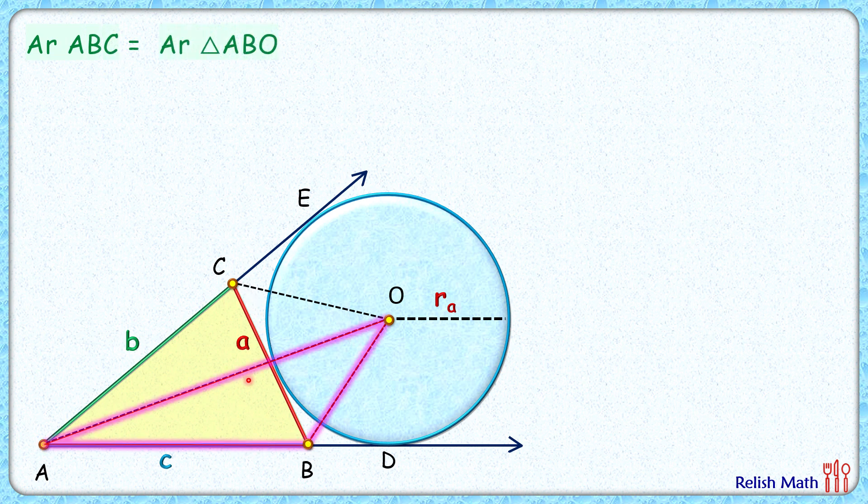From these two triangles, if we subtract this green triangle, we'll be left with the area of the yellow triangle. For triangle ABO, the pink triangle, area is given by half of base into height. If base is c and height is the distance from this vertex to the baseline, this height is nothing but the radius of the circle.